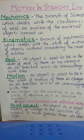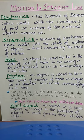Now suppose two students are sitting adjacent to each other. What is the condition of one student with respect to the other — rest or motion? It will be rest, because there is no change in the position of either student with respect to the other. So we say they are in the state of rest.